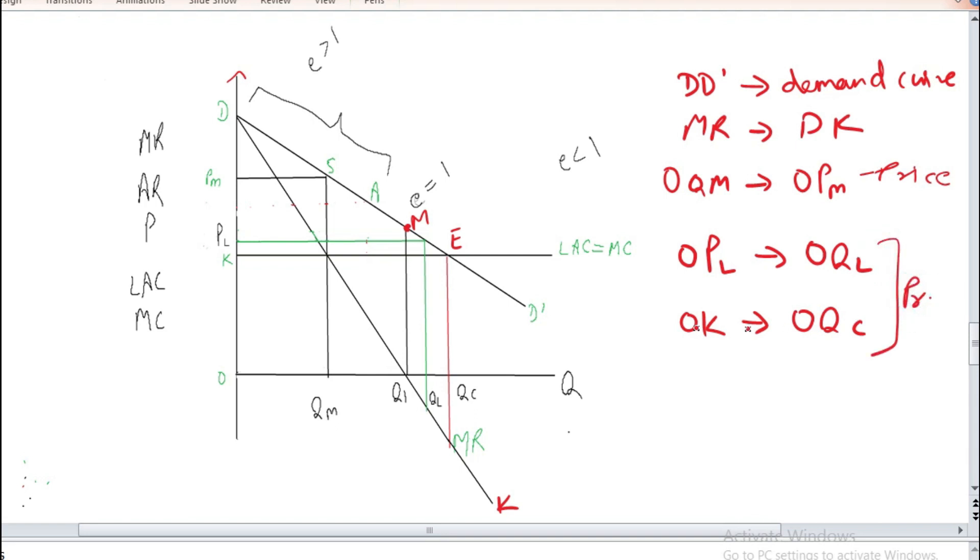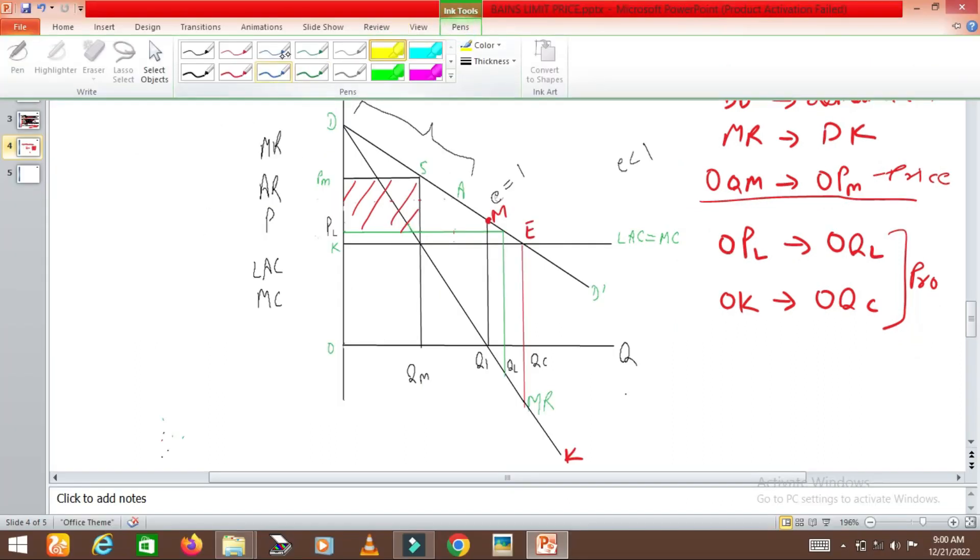You can see that a firm will charge a price at which its profit or revenue is certain. This profit may seem a greater portion but this is uncertain because if the firm is charging OPM price it may attract entry of new firms and all this profit level may vanish. But this level of profit is certain so the firm will stick to the OPL price.